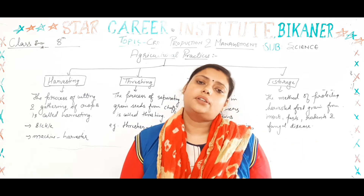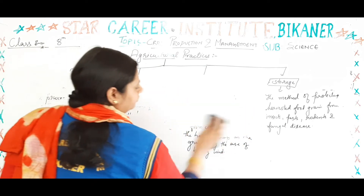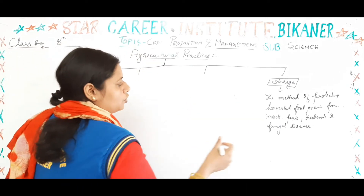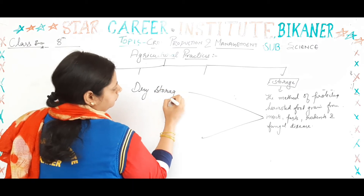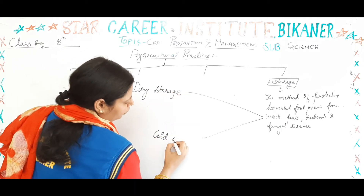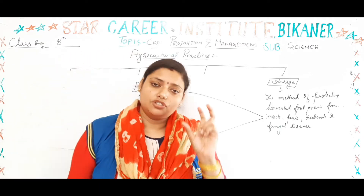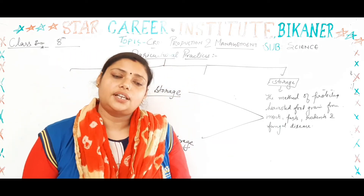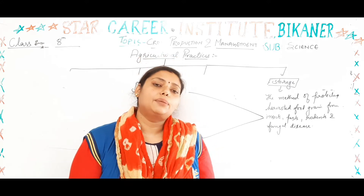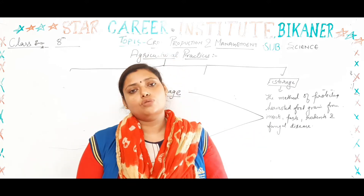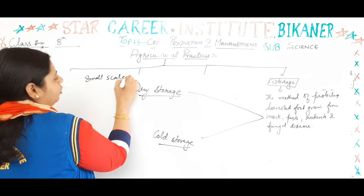There are two ways to store grains: dry method and cold method. In dry storage, grains that have a longer shelf life and do not spoil quickly are dried in the heat and then stored. There are two scales of storage: large scale and small scale. In small scale, grains can be stored in jute bags or metallic bins.